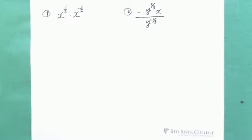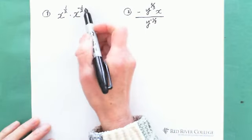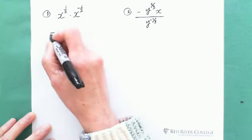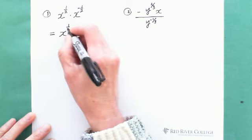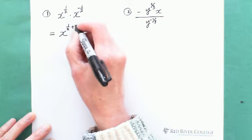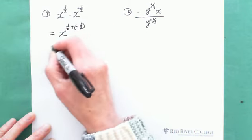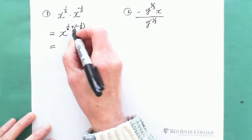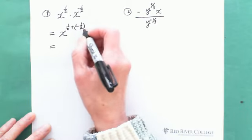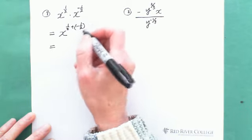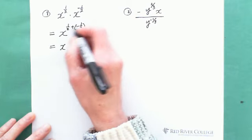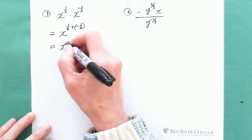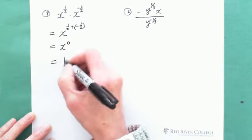The first question: x to the 1/2 exponent multiplied by x to the negative 1/2 exponent. Because of the same base, we add the exponents. Positive 1/2 plus negative 1/2 equals 0, because they are the same value but opposite signs. And x to the exponent 0 equals 1.